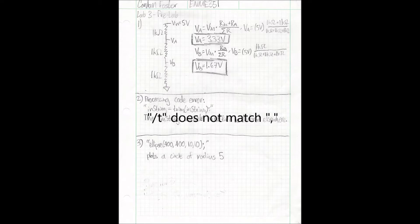Pay no attention to what I physically wrote for that one. For the final part, the ellipse code draws a circle with radius 5, because 10 is the height and 10 is the width.